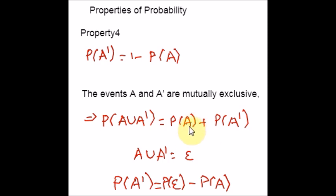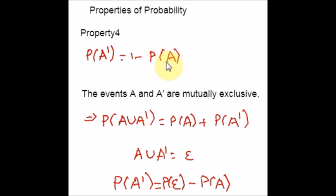This property is surprisingly useful and is applied frequently in probability problem solving. When the probability of the event of interest is difficult to calculate directly, you can calculate the probability of its complement instead. The probability of not that event equals 1 minus the probability of that event.